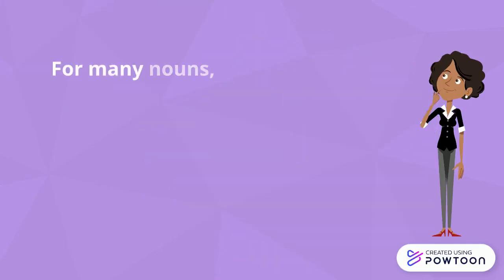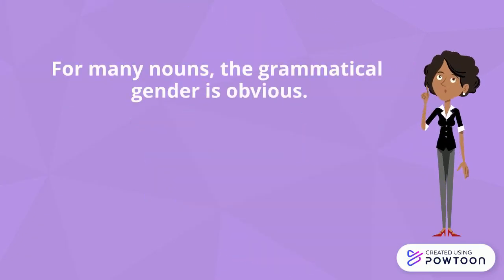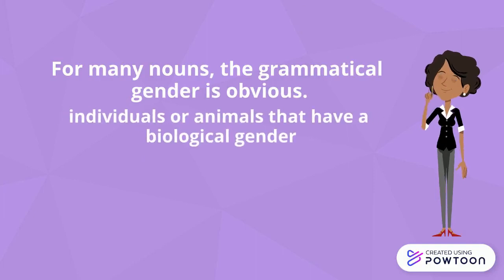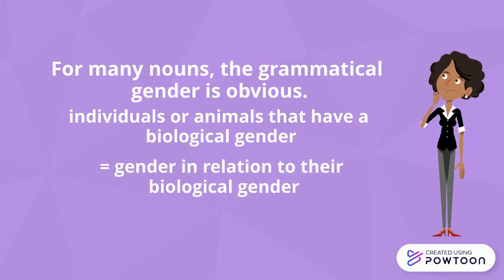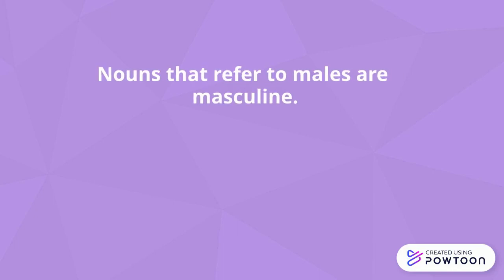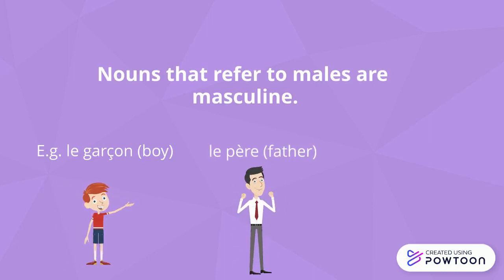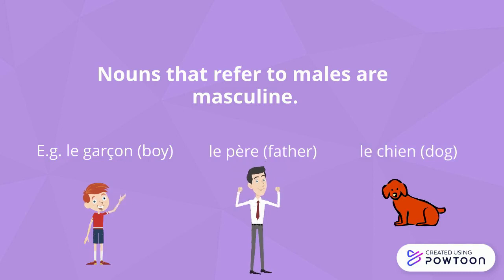For many nouns, the grammatical gender is obvious. When the noun designates individuals or animals that have a biological gender, you should choose the gender in relation to their biological gender, or obviously a gender that they choose for themselves. Generally, but not always, nouns that refer to males are masculine. For instance, 'le garçon' (boy), 'le père' (father), 'le chien' (dog) — all these nouns are masculine.